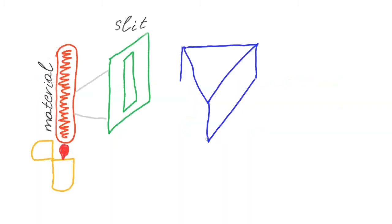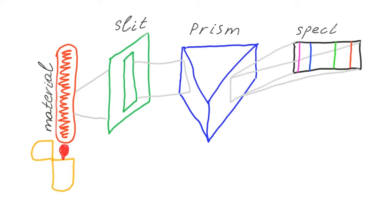By heating up a material and letting the light go through the prism, one can see the so-called emission spectrum. This kind of experiments were popular in the 19th century and showed that atoms can emit and absorb electromagnetic waves only of particular frequencies.